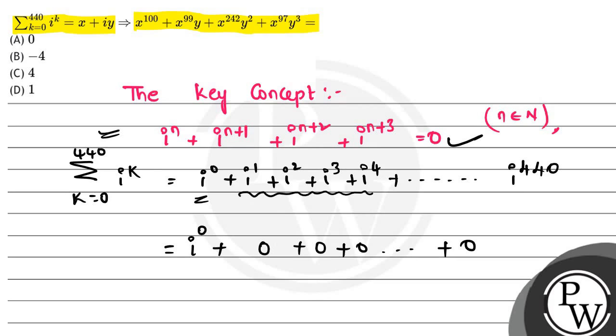So Sigma K equals 0 to 440 of iota^K is nothing but iota^0, which equals 1.